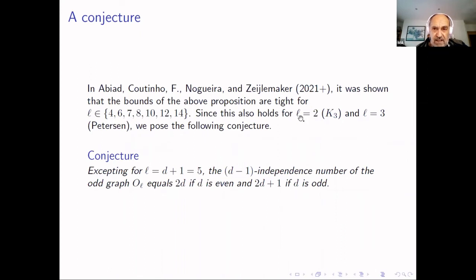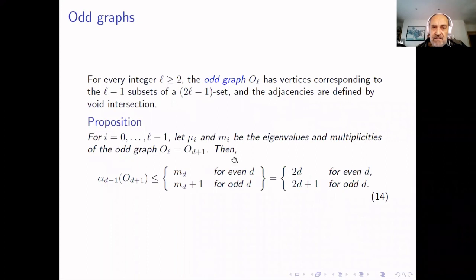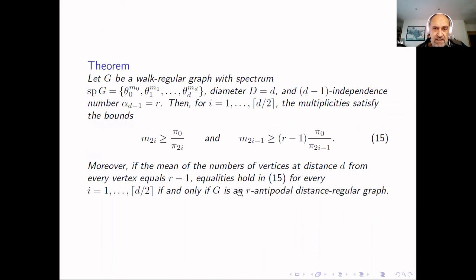In one of our recent works, we showed that for even D, these are CH graphs — the design and minor polynomials coincide up to a linear combination. Moreover, for these values of L, the bounds are also tight for all values of the odd graphs, including for L equal 2 (Petersen graph) and L equal 3 (Kneser graph). This leads us to state the following conjecture: for L equal 5, the D minus one independent number of the odd graph O_L attains these bounds — the bounds would be tight.